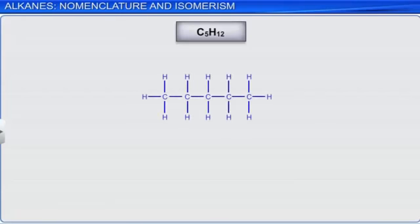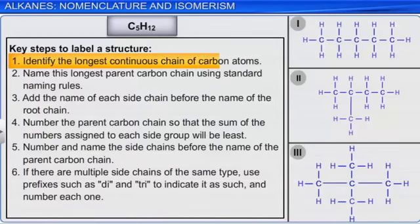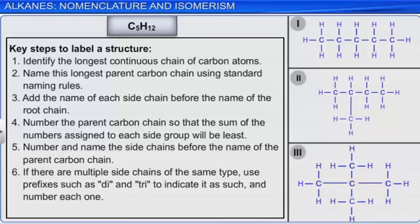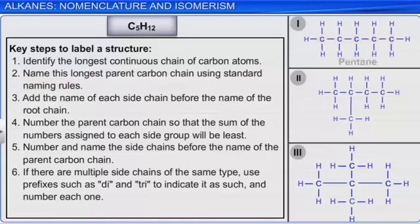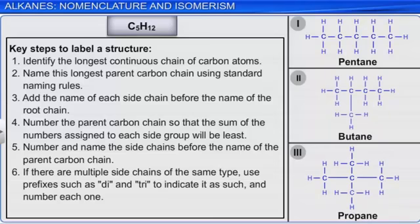Let's look at the three structures obtained for pentane, C₅H₁₂, and label them as structures 1, 2, and 3. First, identify the longest continuous chain of carbon atoms. Structure 1 contains 5 carbon atoms, structure 2 contains 4 carbon atoms, and structure 3 contains 3 carbon atoms in the parent carbon chain. Next, name this longest parent carbon chain: structure 1 is pentane, structure 2 is butane, and structure 3 is propane. Since structure 1 doesn't have any branches, its name is pentane.